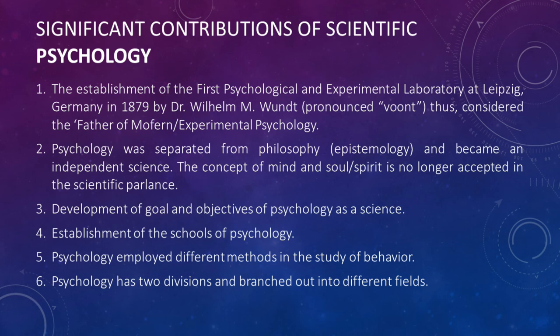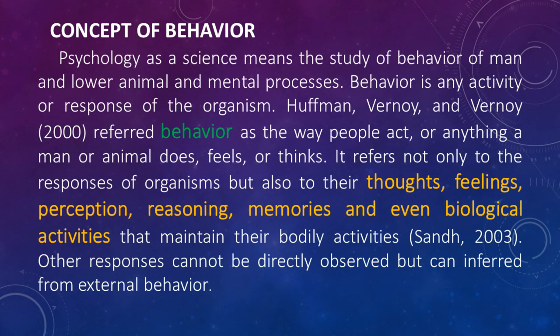Here are the significant contributions of scientific psychology: one, the establishment of the first psychological and experimental laboratory at Leipzig; two, psychology was separated from philosophy and became an independent science; three, development of the goals of psychology as a science; four, the establishment of the schools of psychology; five, psychology employed different methods in the study of behavior; six, psychology has two divisions and branches into different fields. Psychology as a science means the study of behavior of man and lower animals and mental processes. Behavior is any activity or response of the organism — referring not only to responses but also to thoughts, feelings, perception, reasoning, memories, and biological activities that maintain bodily functions. Some responses can be directly observed while others must be inferred from external behavior.